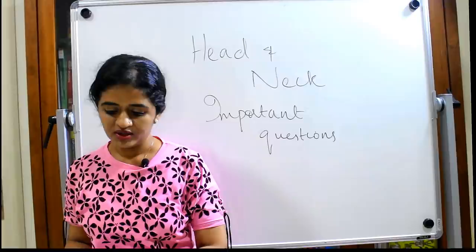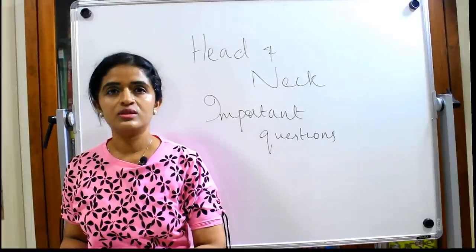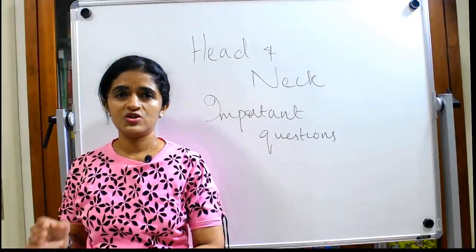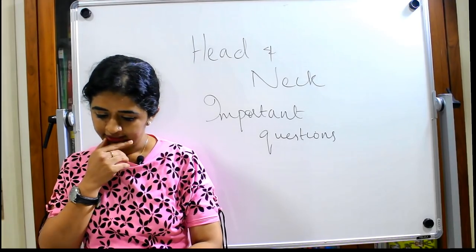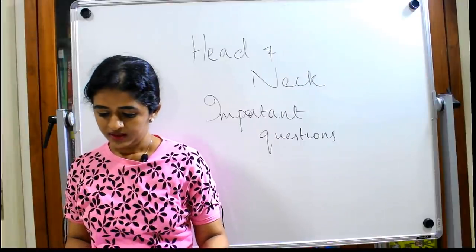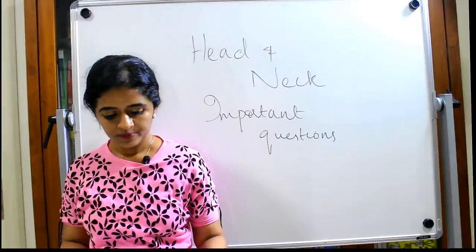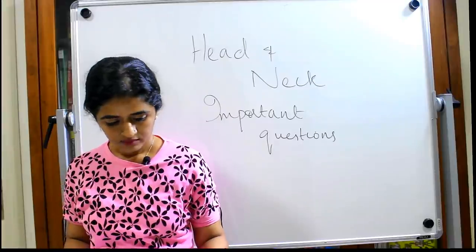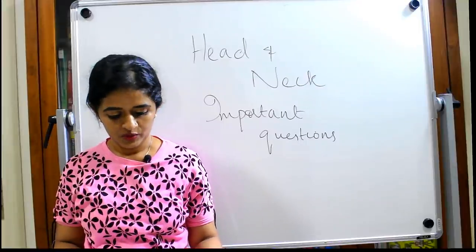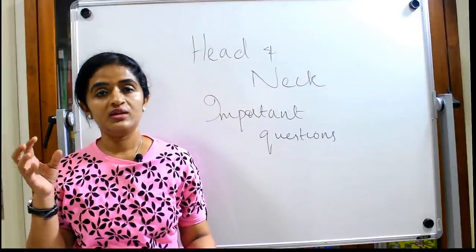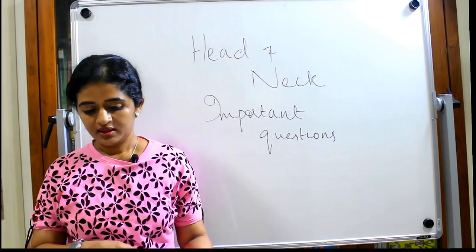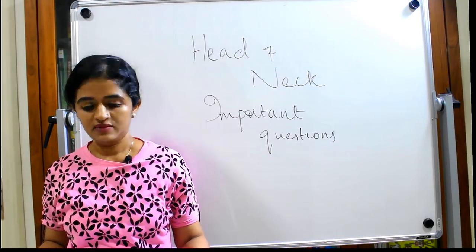Coming to the submandibular region: the important questions are the hyoglossus muscle and its relations as a diagram or short note. Then the submandibular gland and its nerve supply are favorite questions. Also know the applied aspect — bimanual palpation, and how to distinguish between a swelling from the submandibular gland versus a lymph node. That is a favorite question — read the clinical correlation box.